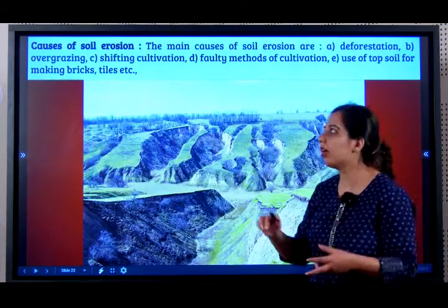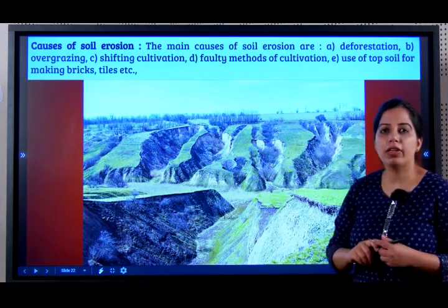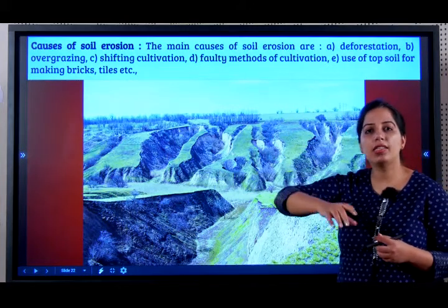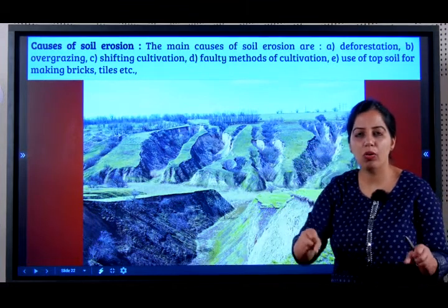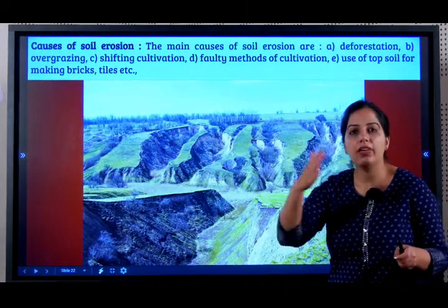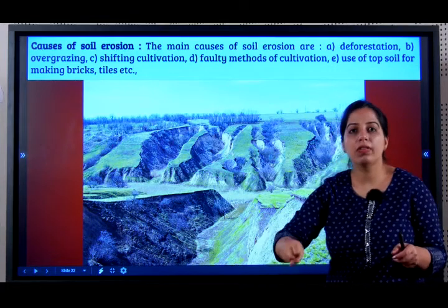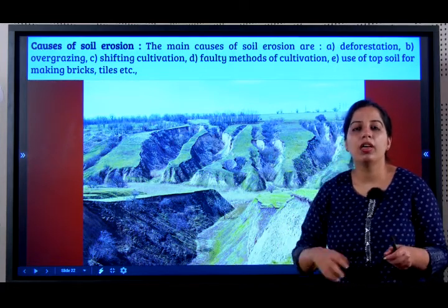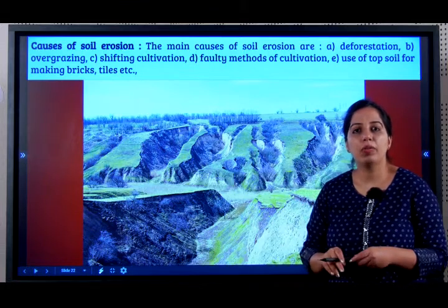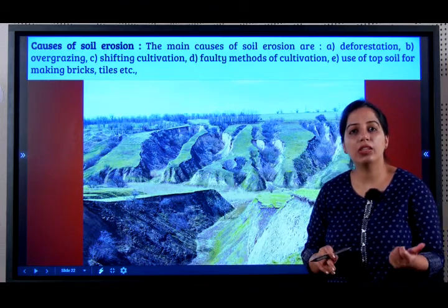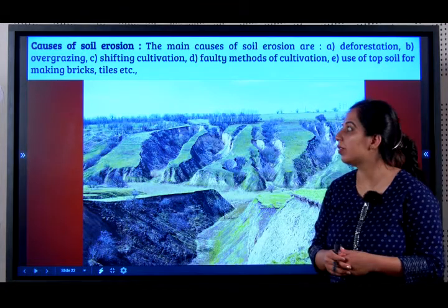What could be the causes? The main cause is deforestation. When there are forests, there are trees. The roots of the trees hold the soil. So even when rain, wind, glaciers come, the roots give strong support. But because we are cutting forests, the problem of deforestation is leading to another problem of soil erosion.